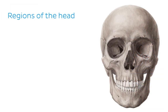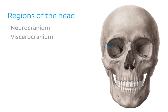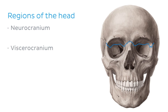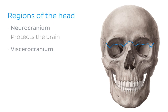The head is divided into quite a few regions, and these regions are in turn grouped into either regions of the neurocranium or regions of the viscerocranium. Above the blue line we have the neurocranium and below it we have the viscerocranium. Essentially, the neurocranial portion of the skull protects the brain, and the viscerocranial portion forms the face.